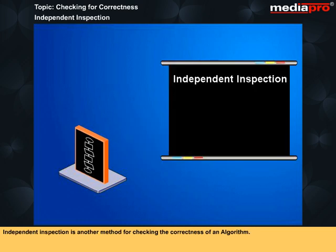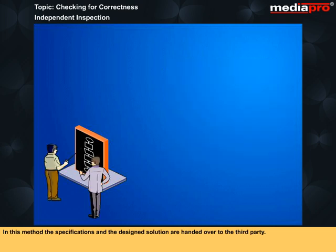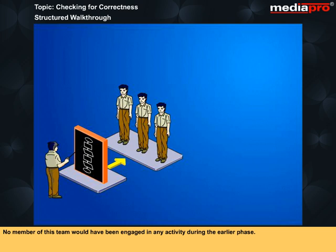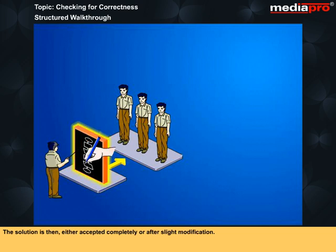Independent inspection is another method for checking the correctness of an algorithm. In this method, the specifications and the design solution are handled over to the third party. This method must be adopted as it brings objectivity in the design algorithm. This method involves a presentation of the algorithm to a team. No member of this team would have been engaged in any activity during the earlier phase. This team then points out inconsistencies and errors, if any, in the algorithm. The solution is then either accepted completely or after slight modification.